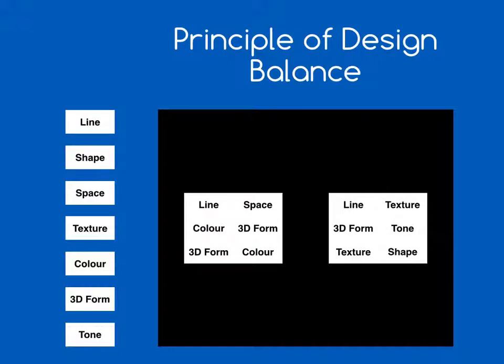The first principle of design is balance. Balance is fairly simple to understand — balance between objects. Here the two white rectangles, built up of the elements, are the same size and equally spaced on the page, so they are in balance. You could also say that there is a balance between the white space and the black space — the positive space and the negative space are in balance.